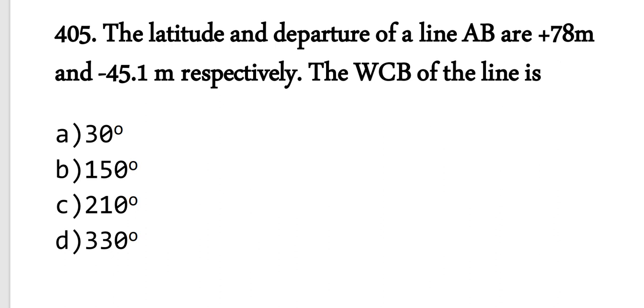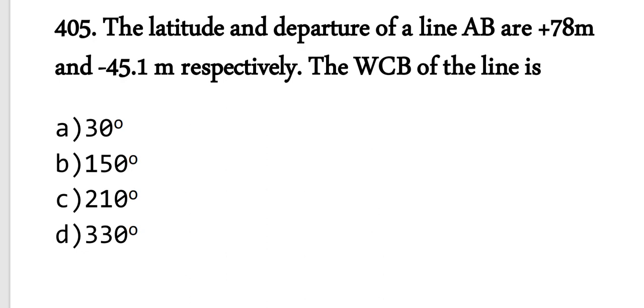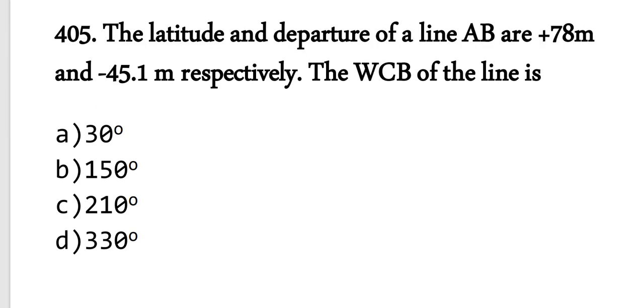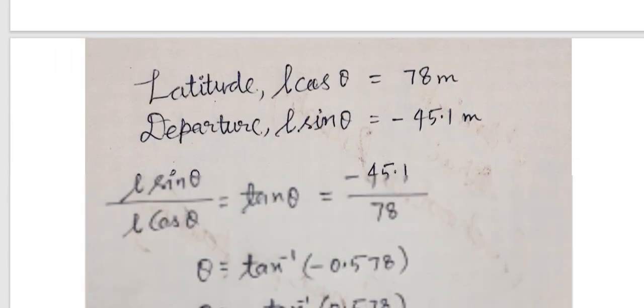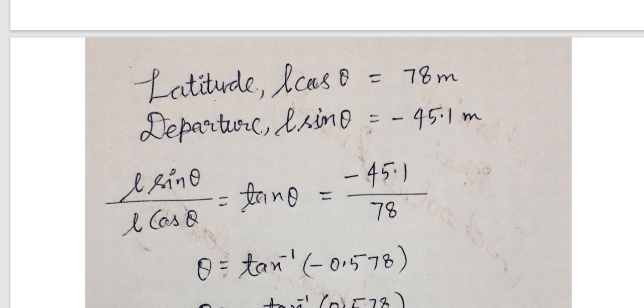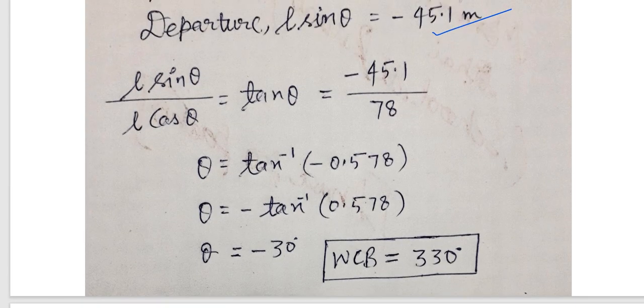Question number 405: Finding the whole circle bearing of a line. We use the latitude and departure formula. Latitude is L cos theta equals 78, and departure L sin theta equals minus 45.1. To find the angle, we divide: L sin theta divided by L cos theta equals tan theta equals minus 45.1 divided by 78, which equals 0.578. Taking tan inverse 0.578, we get 30 degrees. To convert to whole circle bearing system, since it's minus 30 degrees, we add 360 degrees to get 330 degrees.